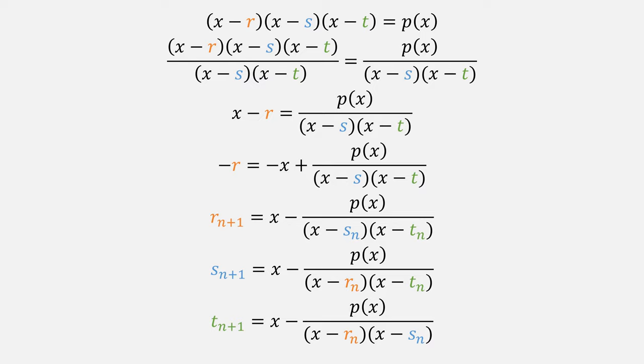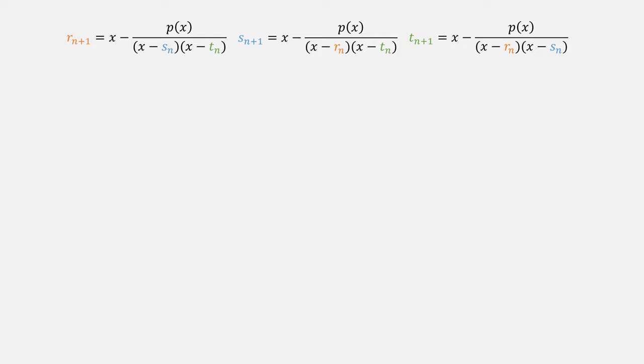We can do the same for s and t. Then, with fixed-point iteration, we label the left-hand side with sub n plus 1 and the right-hand side with sub n. Now we have these three equations.